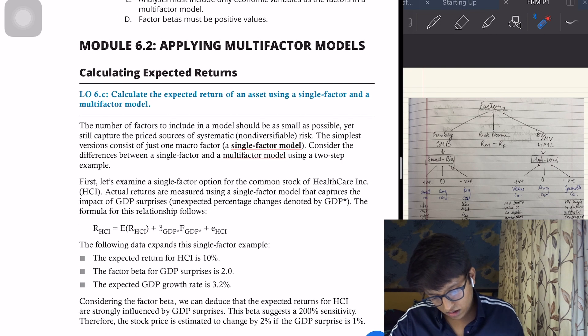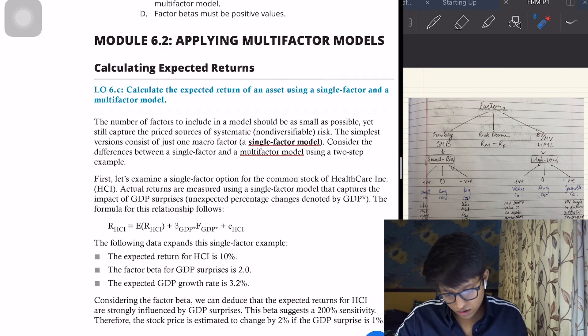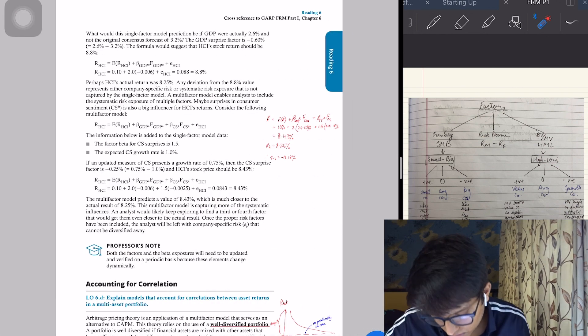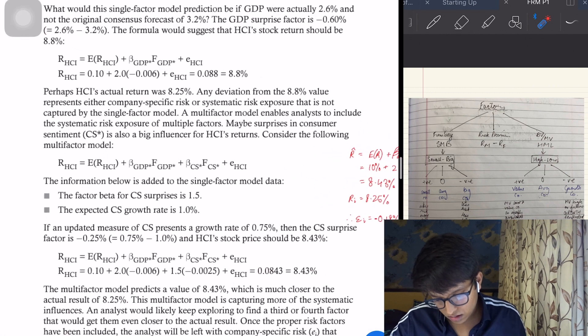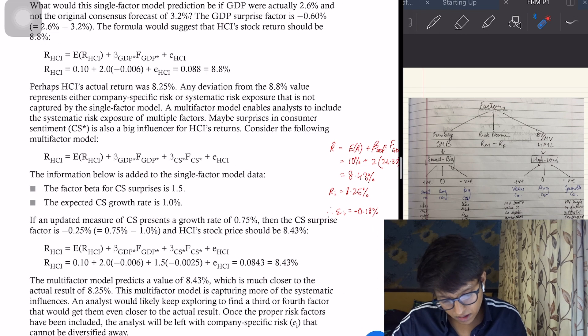Multi-factor model—here they've given an example that the expected return is 10%, beta is 2%, expected GDP is 3.2%. So this means that if the GDP is, let's say, 3.5%, so the return would be higher by 3.5 minus 3.2 times 2, which is 0.6%. The return would be 10.6% plus an error term, or the other way around, same thing.